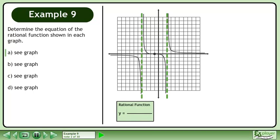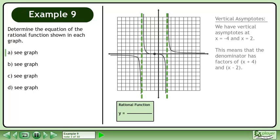Let's draw a green box to store the rational function we will be making. We have vertical asymptotes at x equals negative 4 and x equals 2. This means that the denominator has factors of x plus 4 and x minus 2.